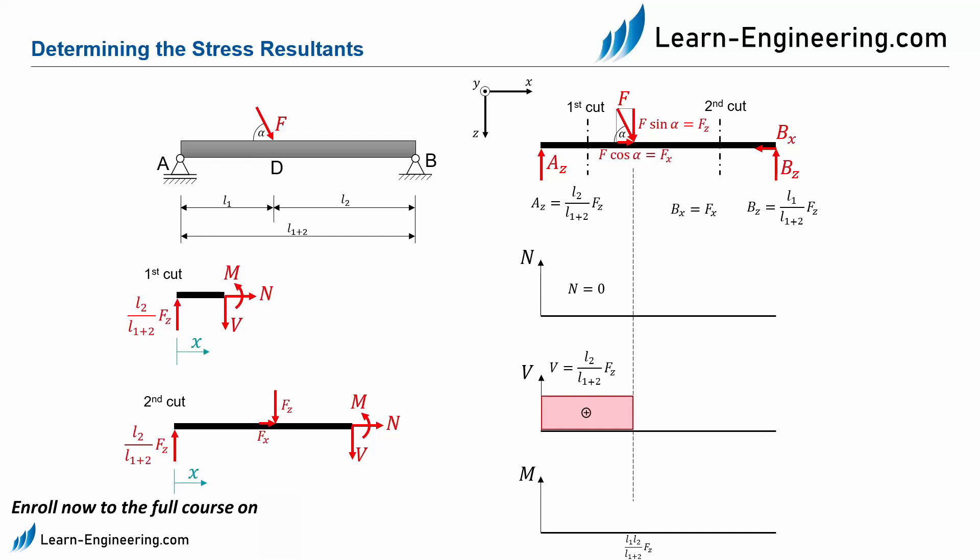For the bending moment diagram, we now form the moment around the intersection and calculate M equal to L2 divided by L1 plus L2 times FZ times X. Here we see that the moment depends on the running variable X. The higher X, the higher the moment. That is, this is a linear function. So we have to draw the bending moment as an increasing line in the bending moment diagram.